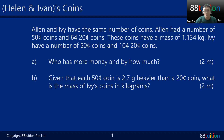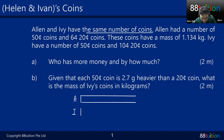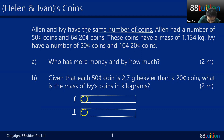What is important here is that they have the same number of coins — this is fixed. If I draw a simple model between Alan and Ivy having the same number of coins, the model will look like this. If Alan has one coin here, Ivy will also have one coin here. The number of coins is the same.